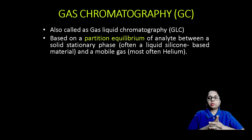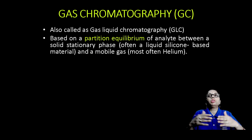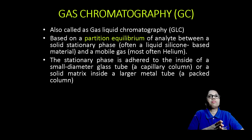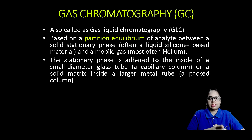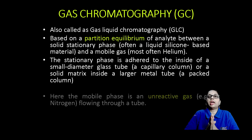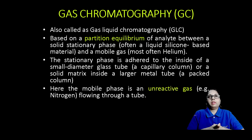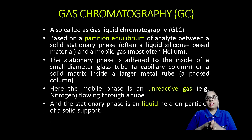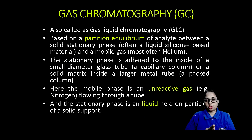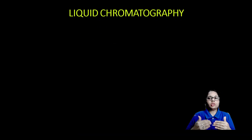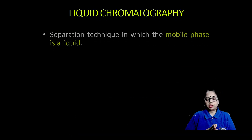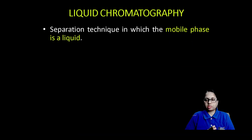Gas chromatography, also called gas-liquid chromatography, is based on the partition equilibrium of the analyte between a solid stationary phase and a gas mobile phase. Helium is used as the mobile phase. The stationary phase is adhered to the inside of a small-diameter glass tube or a solid matrix inside a larger metal tube. Capillary columns — very lengthy columns — are used in GC.